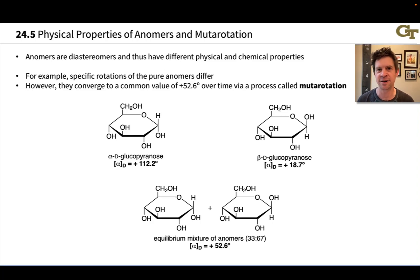Anomers are the two diastereomers of cyclic hemiacetals of carbohydrates, and they're diastereomers because they differ only in configuration at the anomeric carbon—the carbonyl carbon in the open chain form and the hemiacetal carbon in the closed form. That's right here, for example, in these anomers of glucopyranose.